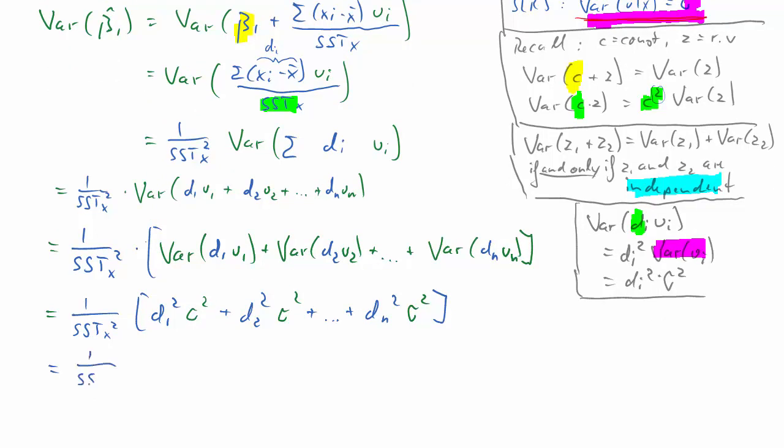And then we get the sum of the di squareds. And the sum of the di squareds is of course nothing else but the sstx, the sum of squared totals. Given the definition of di, then we can cancel out one of those and we are left with sigma squared over sstx, the sum of squared total of x.